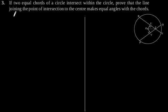Exercise 10.4 Question number 3. If two equal chords of a circle intersect within the circle, prove that the line joining the points of intersection to the center make equal angles with the chords.